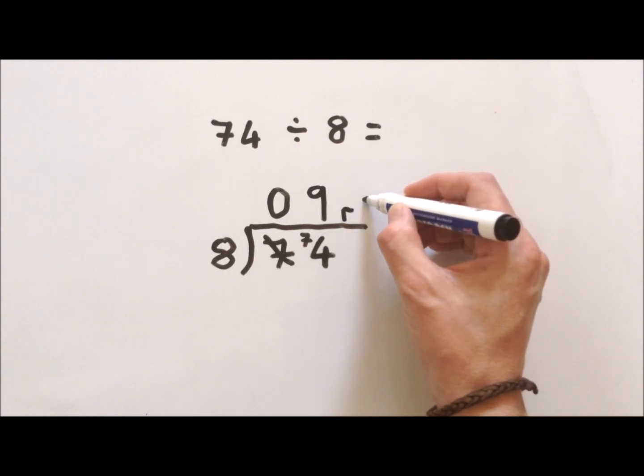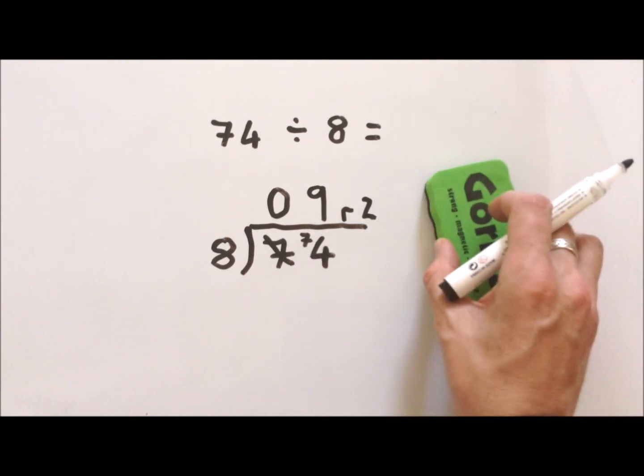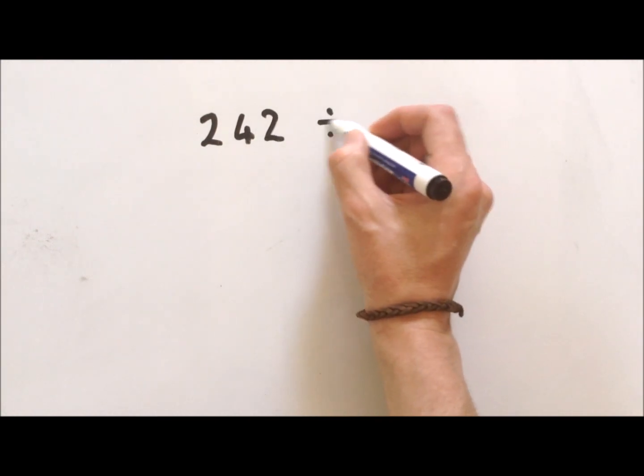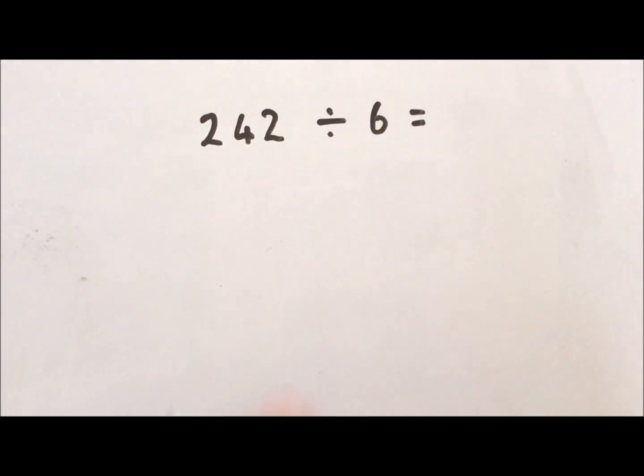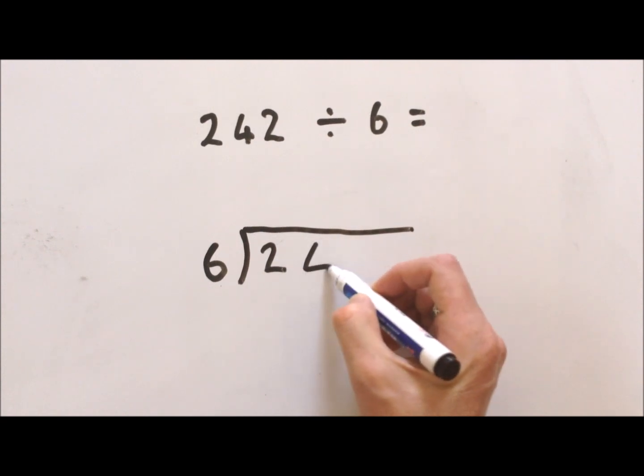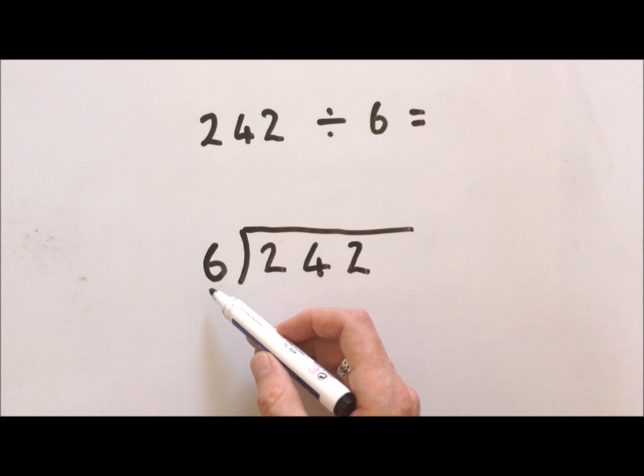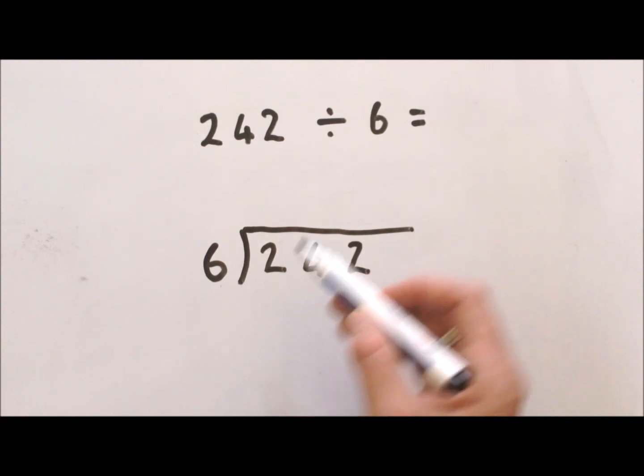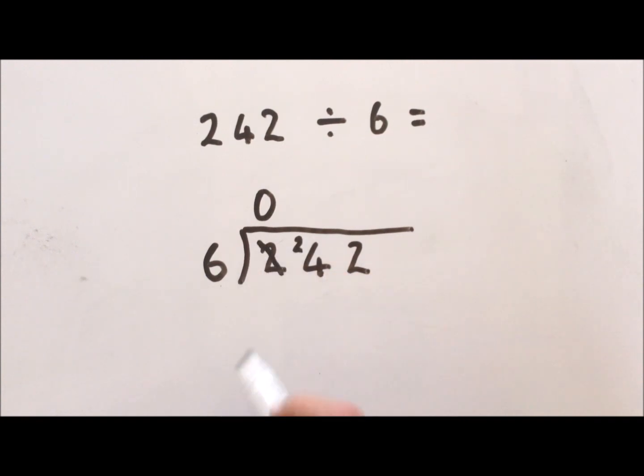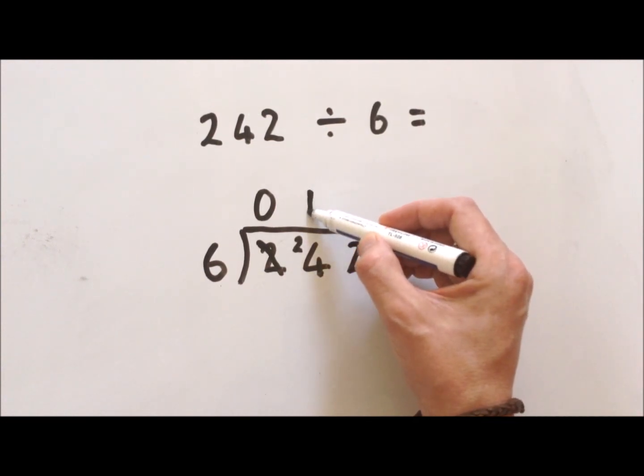Let's do one more, maybe even a three-digit number now: 242 divided by 6. It's quite a big one. Let's put it in our bus stop: 2, 4, 2. How many 6s can we get out of 2? We can't do that, so that's going to be 0. How many sixes from 24? Well, 1 times 6 is 6, 2 times 6 is 12, 3 times 6 is 18, 4 times 6 is 24, so we've got a 4 here.